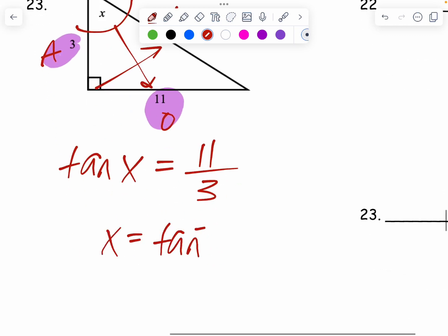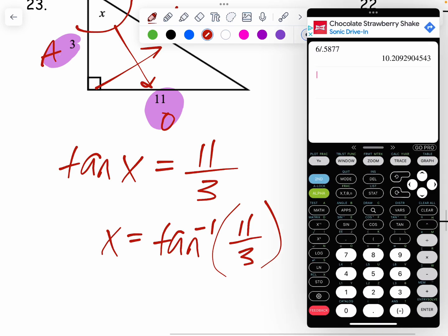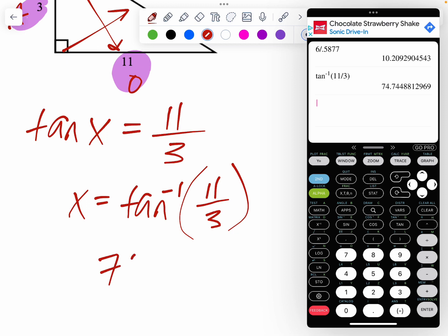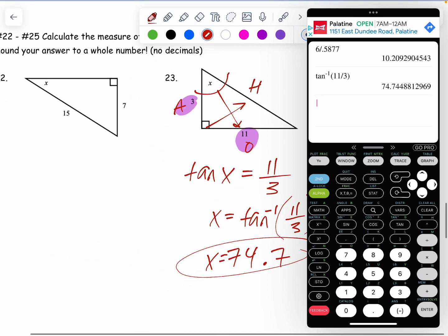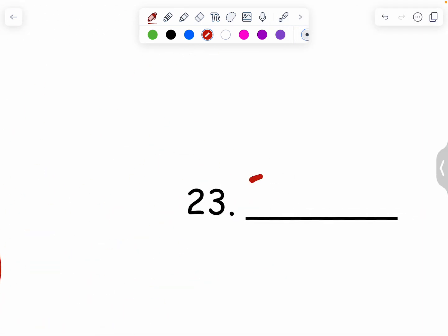In order to get X by itself here, I have to tan inverse the fraction. So I am going to do second tan, so make sure I have that negative 1 symbol, and type 11 over 3 inside the parentheses. And I get 74.7. The 4 after the 7 leaves the 7 the way that it is. 74.7. That goes here.